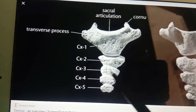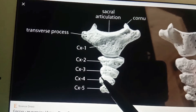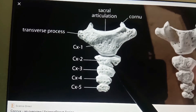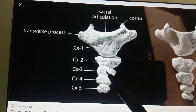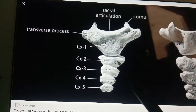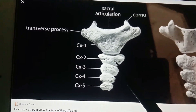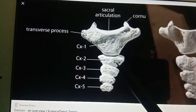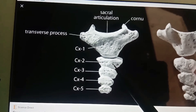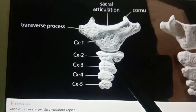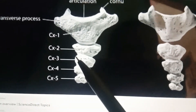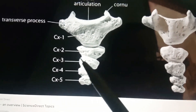The second, third, and fourth coccygeal vertebrae are more like bony nodules which diminish successively in size and are usually fused together. The second piece may show rudiments of transverse processes and pedicles.